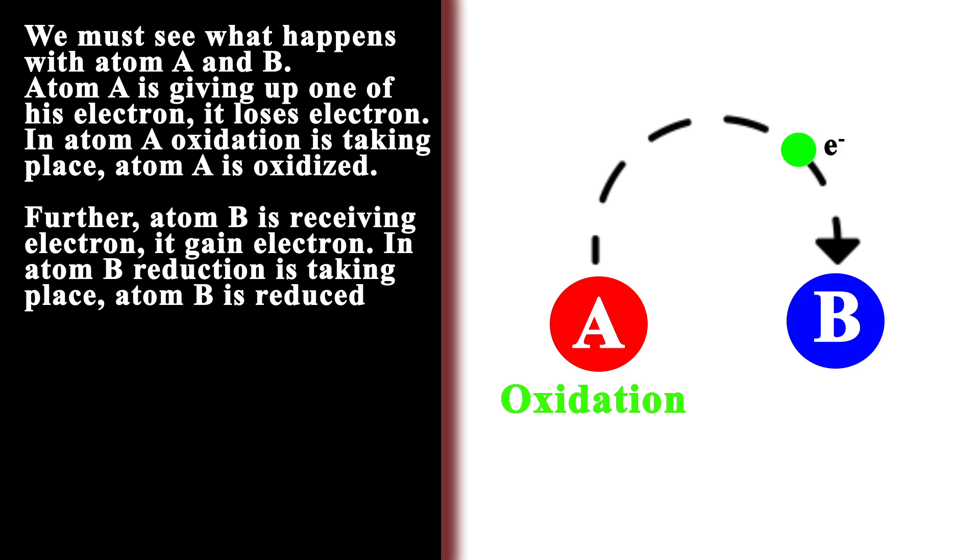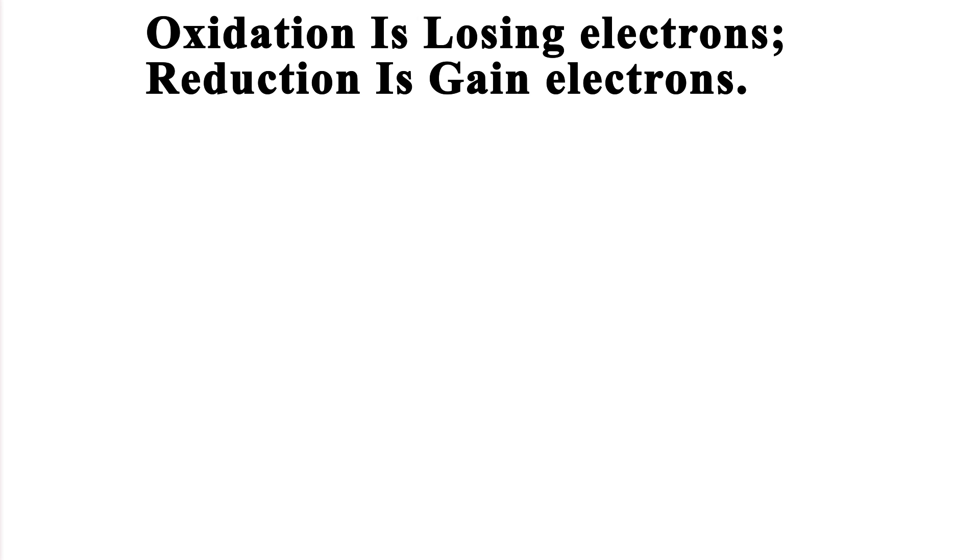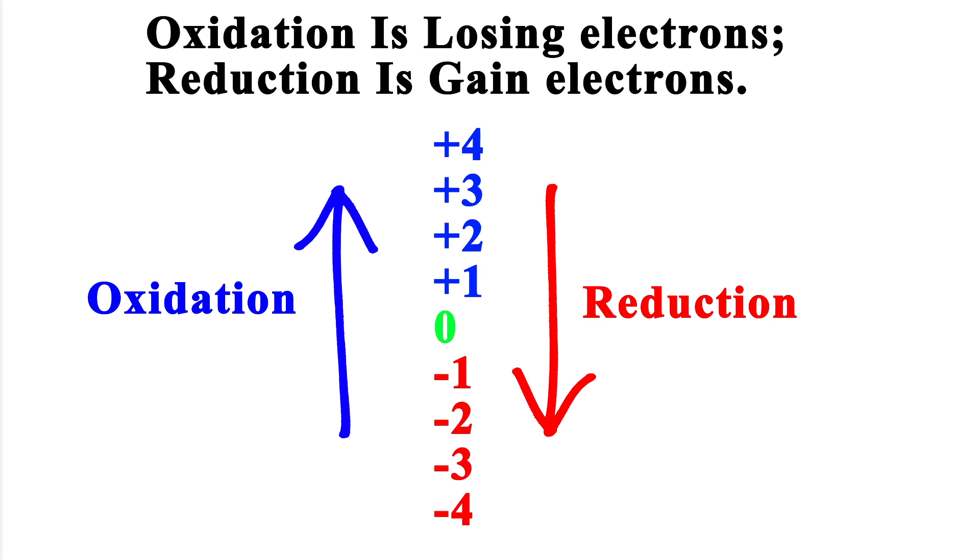It may be confusing when we talk about oxidation being loss of electrons and reduction being gain of electrons. This may resolve the confusion: as we know, electrons have a negative charge, so when we gain or add electrons to something, the charge is reduced.